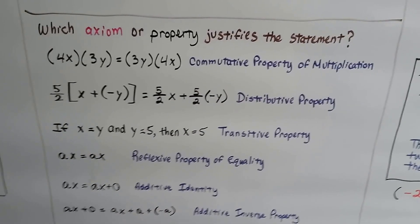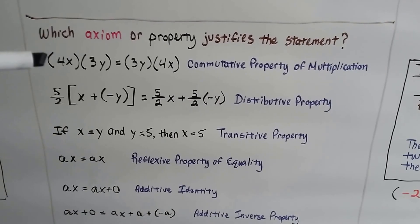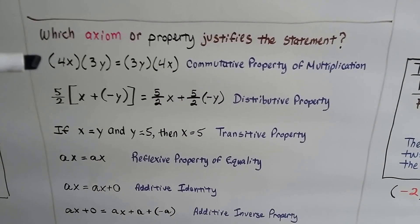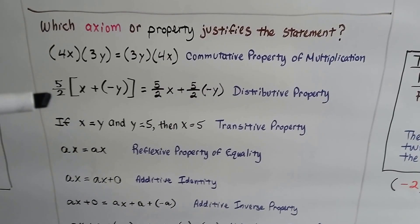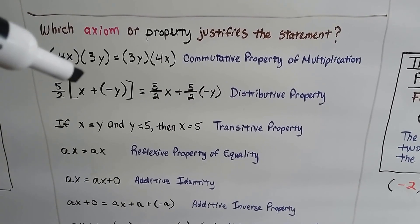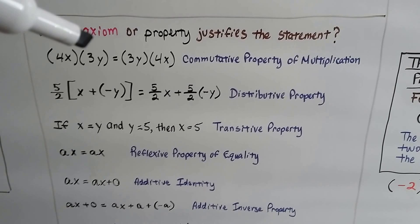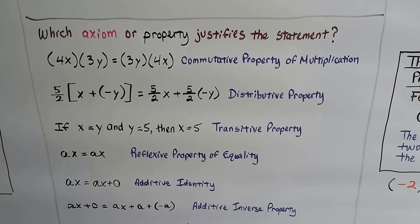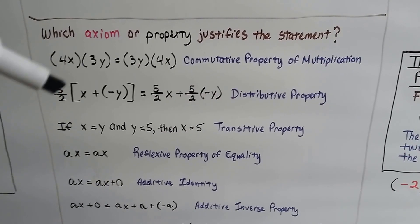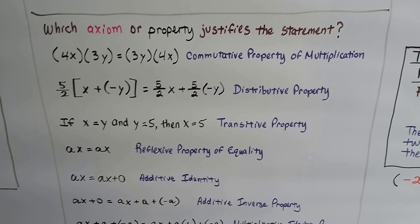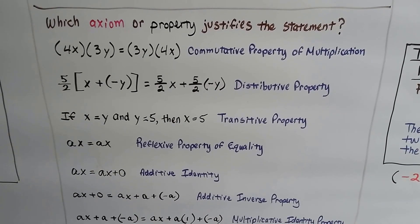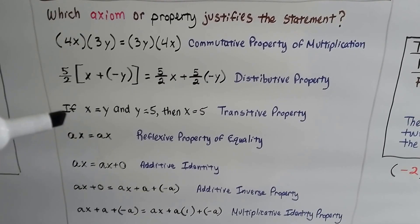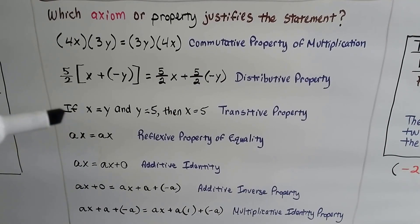Which axiom or property justifies each statement? We have 4x times 3y equals 3y times 4x — that's the commutative property of multiplication. If we have 5/2 times (x + (-y)) equals 5/2 x plus 5/2 times (-y), that's the distributive property — it distributed 5/2 to each term inside. And if x equals y and y equals 5, then x equals 5 — that's the transitive property.